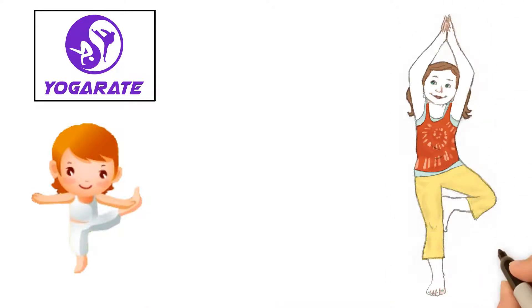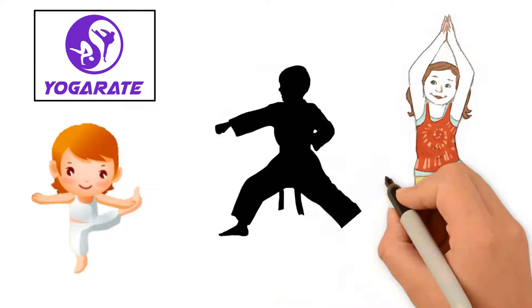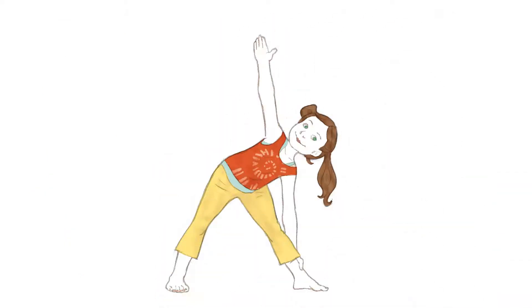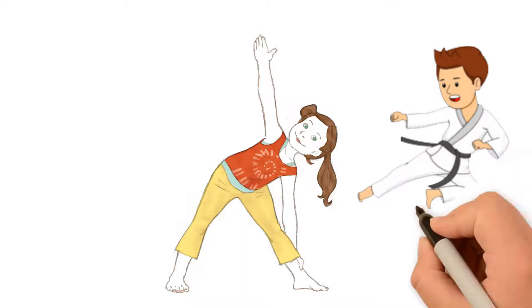Sun salutations use breath as does a block. Breathing connects yoga and karate together. Yogarati Yenseis have been teaching children how to breathe, move, stretch, and defend themselves for over a decade.